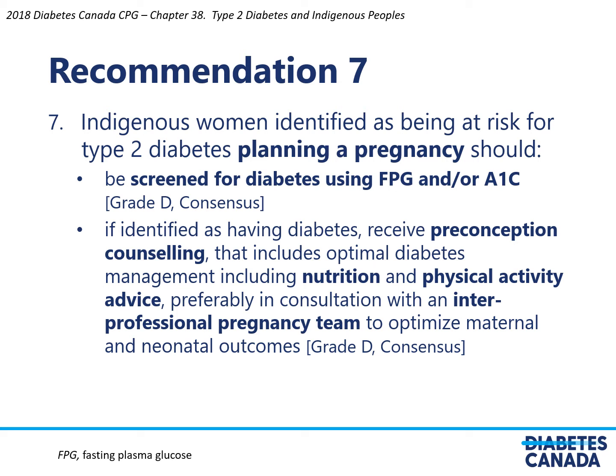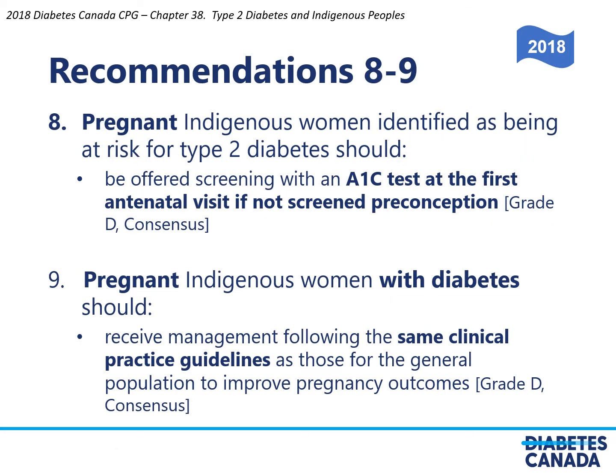Recommendation 7: Indigenous women identified as being at risk for type 2 diabetes and planning a pregnancy should be screened for diabetes using fasting plasma glucose and/or A1C. If identified as having diabetes, they should receive preconception counseling that includes optimal diabetes management, including nutrition and physical activity advice, preferably in consultation with an interprofessional pregnancy team to optimize maternal and neonatal outcomes. Pregnant Indigenous women identified as being at risk for type 2 diabetes should be offered screening with an A1C test at the first antenatal visit if not screened preconception. Pregnant Indigenous women with diabetes should also receive management following the same clinical practice guidelines as those for the general population to improve pregnancy outcomes.